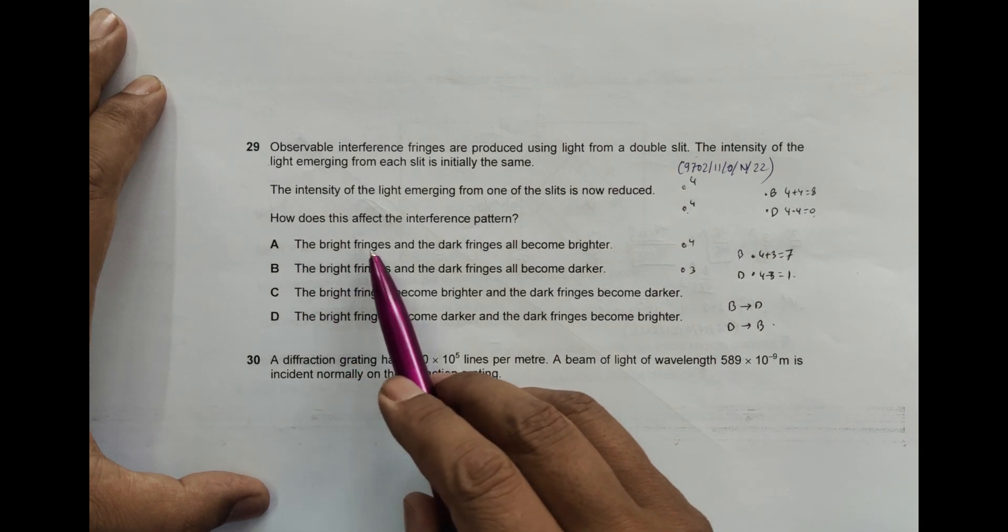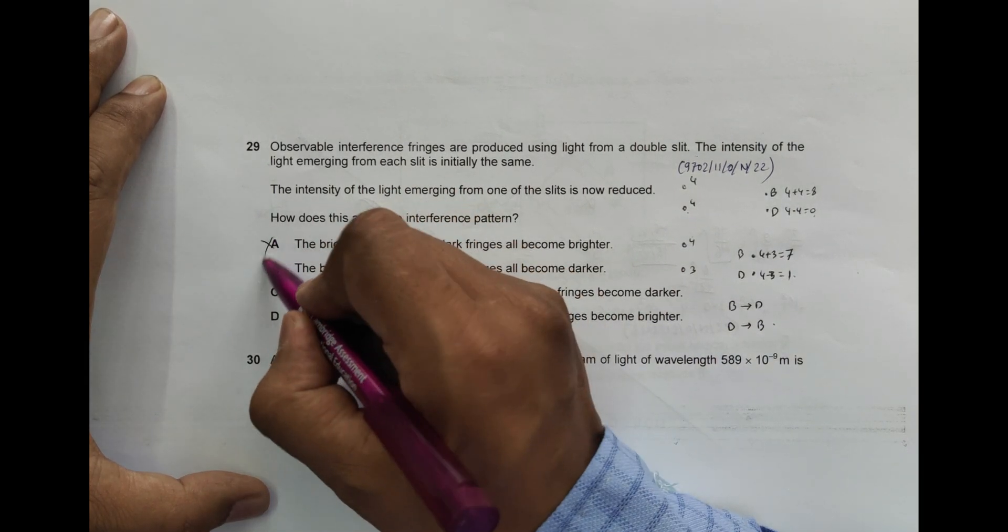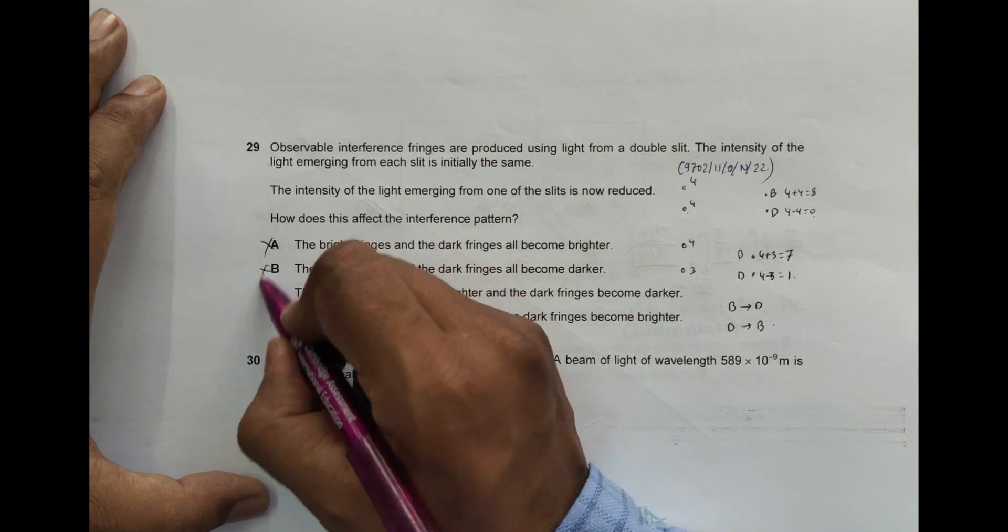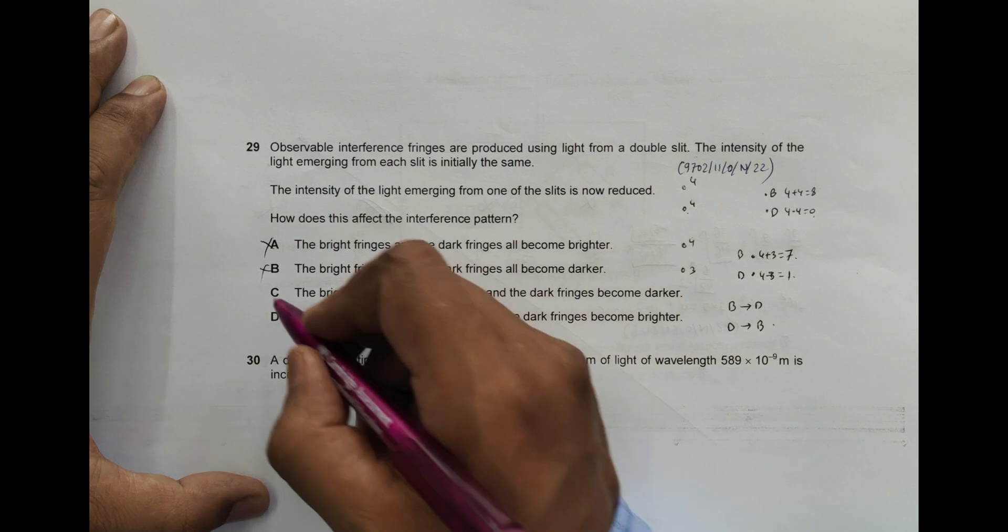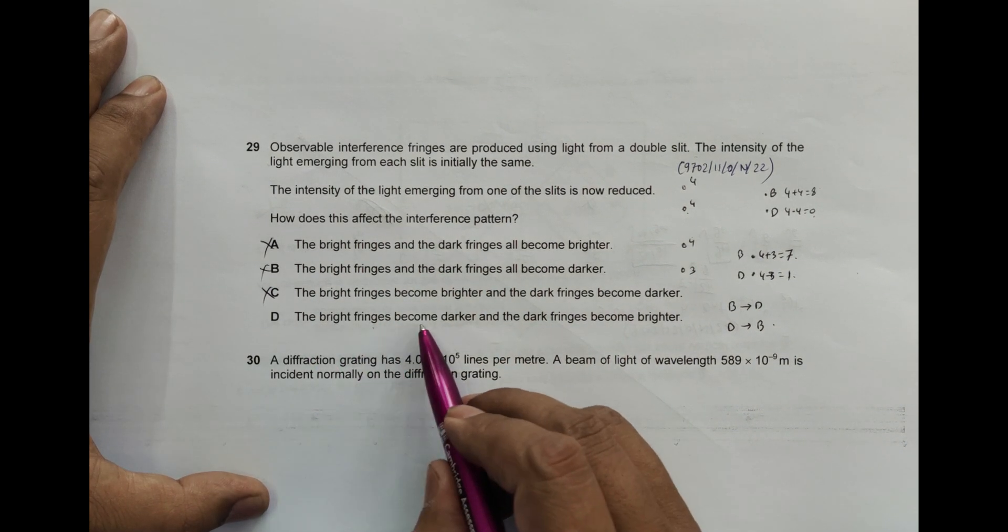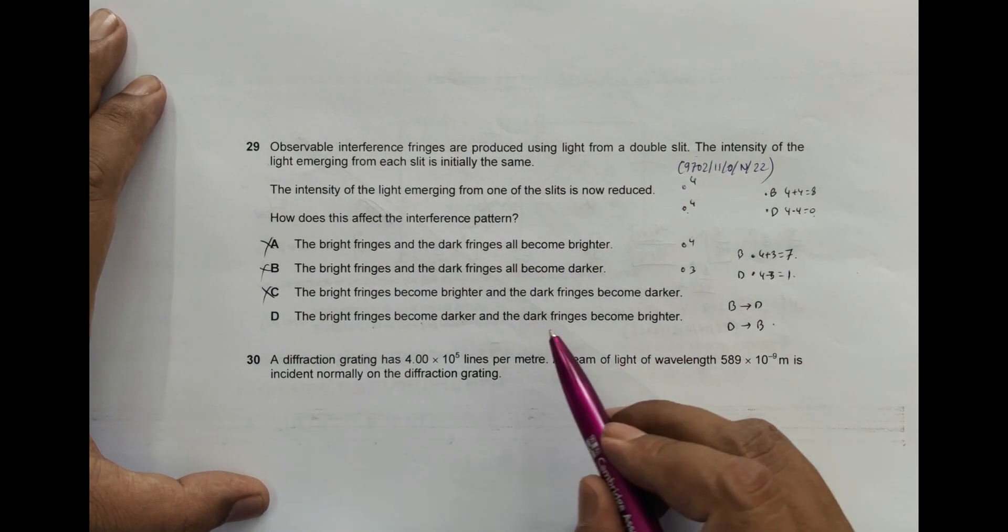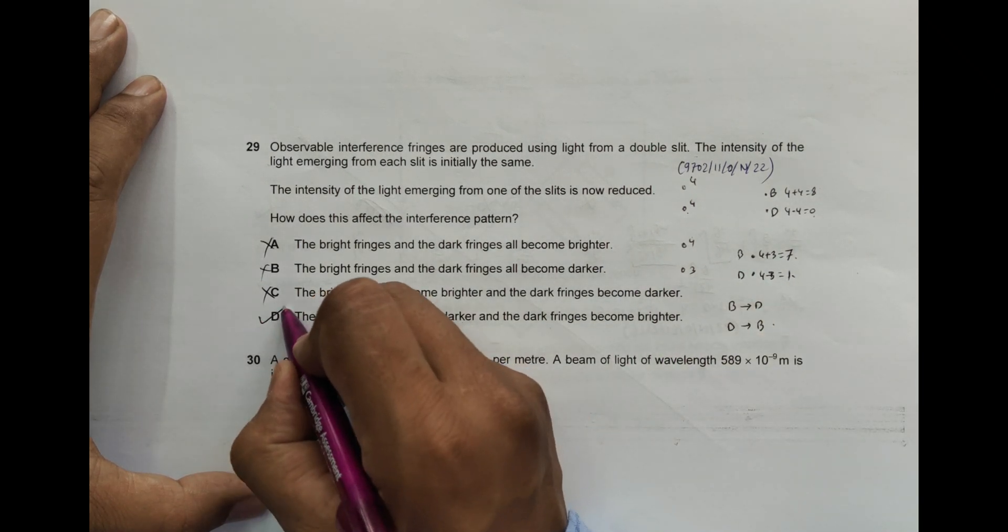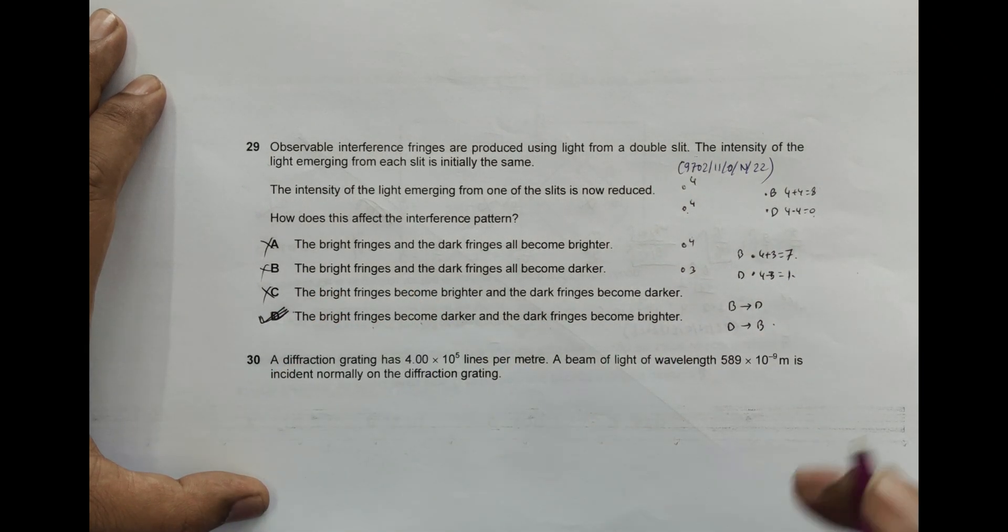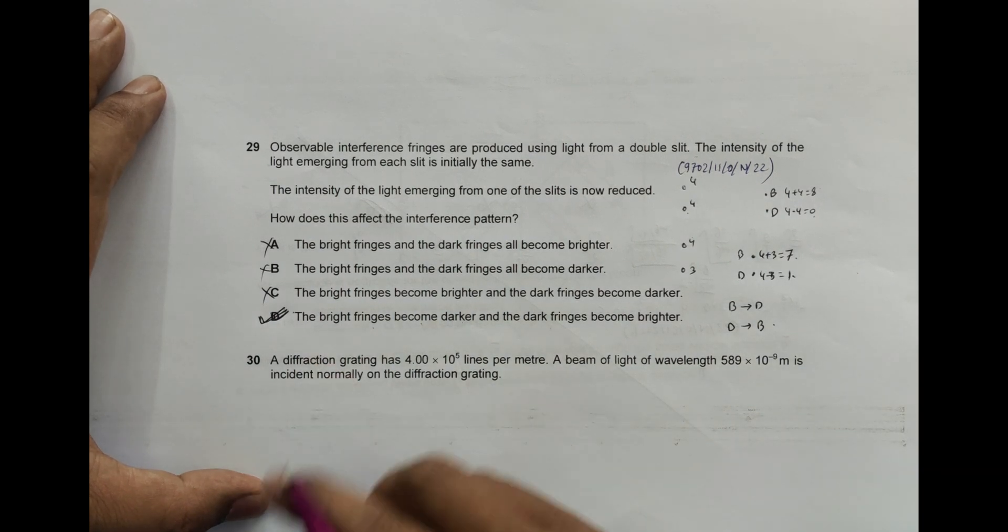From here, do the bright fringes all become brighter? Wrong. Do they all become darker? Wrong. The bright fringes become darker, from 8 to 7, and the dark fringes become brighter, from 0 to 1. So this is the correct choice of answers.